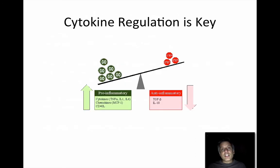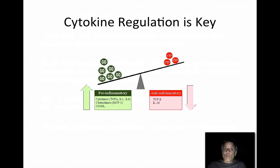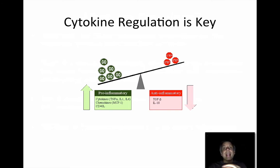In our body, on a daily basis, as we're exposed to infections, environmental toxins, other situations, and emotional stress, our cytokines are actually on a balancing scale. If it tips in the pro-inflammatory direction, we're going to have more inflammation. And if we have more anti-inflammatory action, it tips in the opposite direction. It really is a teeter-totter balance between pro-inflammatory and anti-inflammatory cytokines.